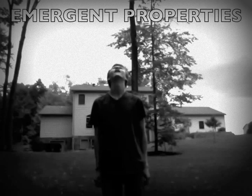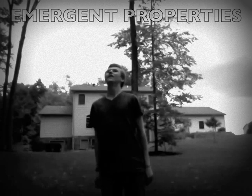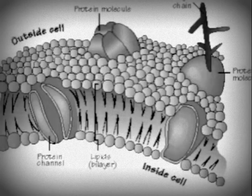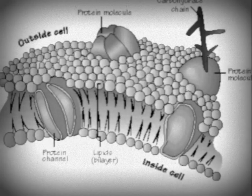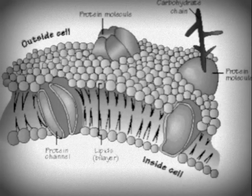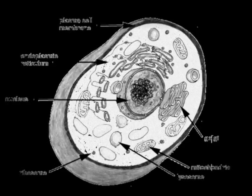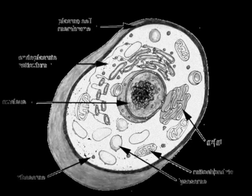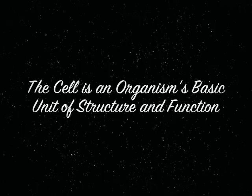Properties that are formed at each level of the biological hierarchy are called emergent properties. Look at this cell membrane, for example — this is an organelle. If we arrange it properly with other organelles, we can make it part of a cell. The cell is an organism's basic unit of structure and function.